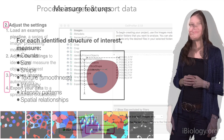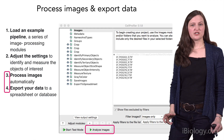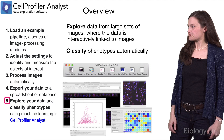Once your pipeline is set up to your liking, you can run it on many images automatically. If it's a small number, you might run it on your laptop or desktop. If it's a very large experiment, you might need to run your images on a computing cluster or use cloud resources online, and there are tools to help you do both.